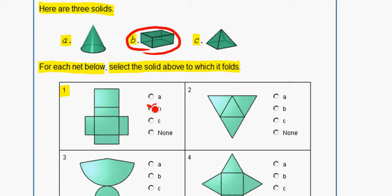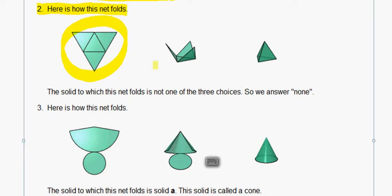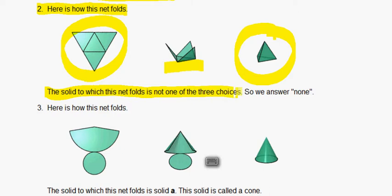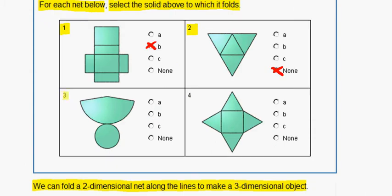We mark figure B for question 1. Now let's look at question 2. Here is how this net folds: we start off with this, it starts folding up, the sides come up, and we end up with this. The solid to which this net folds is not one of the three choices, so we answer none. It does not look like any of our three choices, so we mark none.